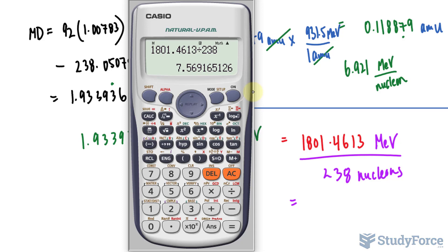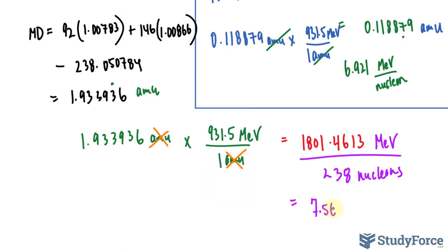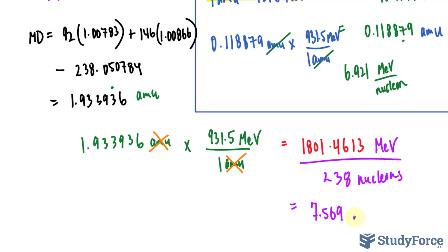7.569. 7.569 mega electron volts per nucleon.